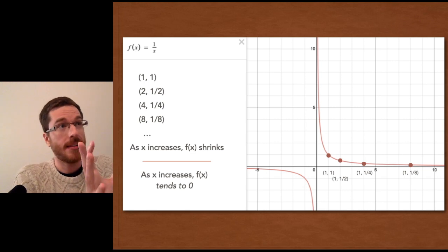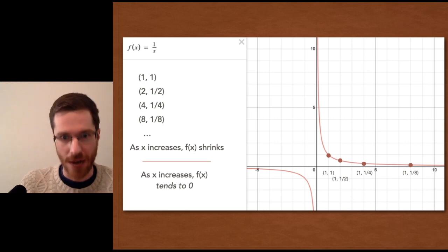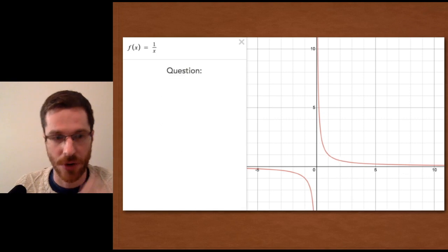The bigger the x, the smaller the one over x. And you can see that relationship graphed there.